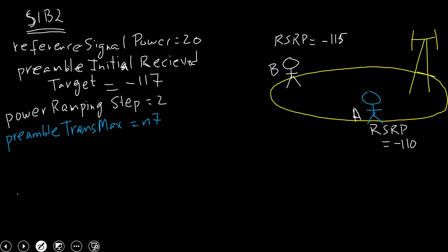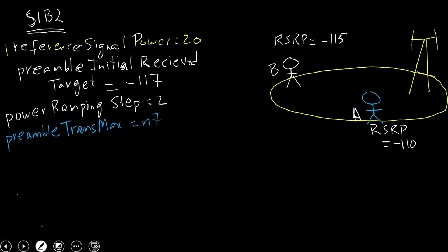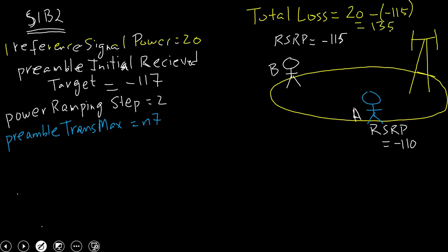Let's say User A's RSRP value is negative 115. Now, these RSRP values are what the users are receiving at their end. From SIB2, users already know the Reference Signal Transmitted Power, which is 20 dBm. So they will calculate the total path loss. For User B: total loss = 20 − (−110) = negative 130 dB. For User A: total loss = 20 − (−115) = negative 135 dB.